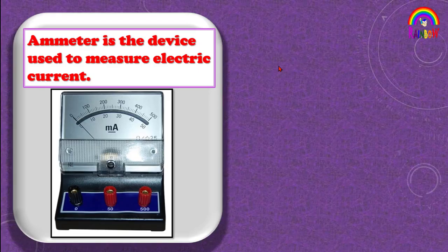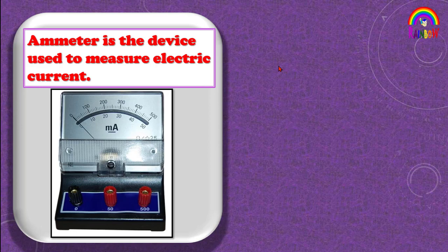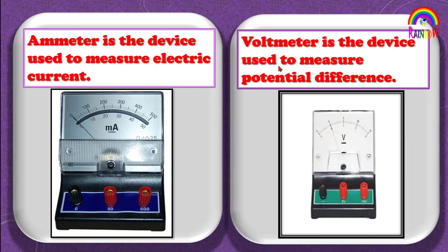is a device used to measure current through a circuit and voltmeter is a device used to measure the potential difference across any two points in a circuit. Friends, before going to connect the ammeter and voltmeter in the circuit